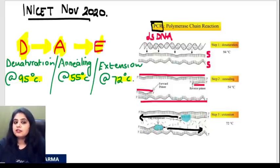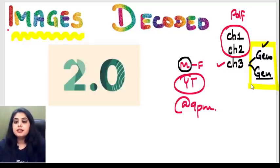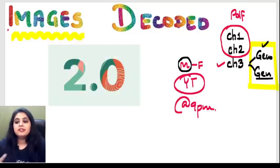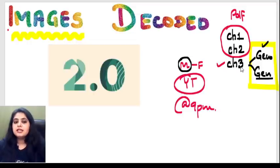With that, the two classes of Images Decoded for genetics are done. I will be circulating the combined PDF of both sessions on the Telegram group. Tomorrow, since we are done with three chapters, let's take up a mixed bag MCQ session pertinent to these chapters — a short session of five to seven MCQs. After that, we'll start chapters like immunity, systemic path, and so on.